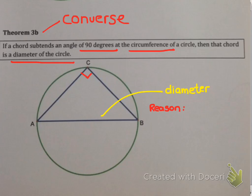The reason we use, when we use theorem 3b, is that a chord subtends 90 degrees. Then you're allowed to assume that that chord is a diameter.